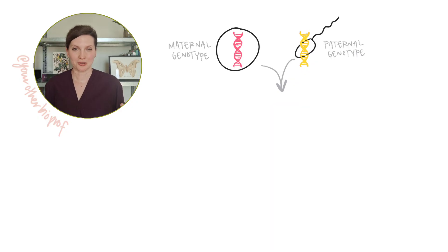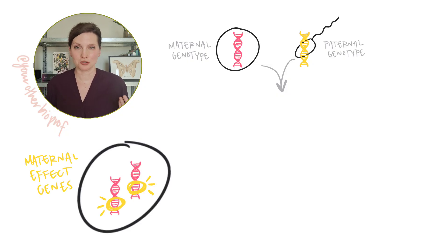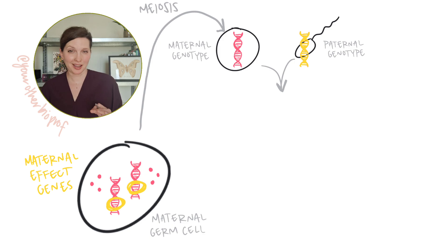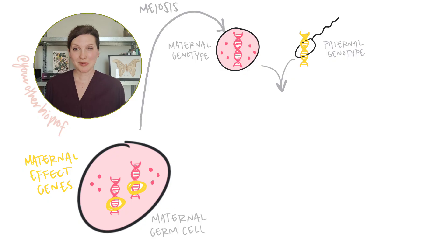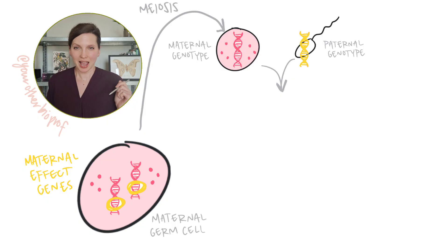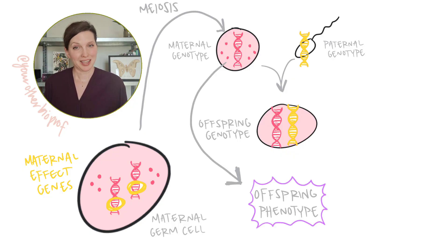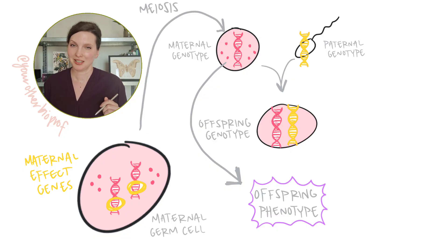With genetic maternal effects, certain genes called maternal effect genes are expressed in the maternal germline — these are the cells that will divide by meiosis to make eggs. The products of these genes, maybe RNA, maybe protein, will be deposited into what will become the egg cell. Mom has spiked the egg cytoplasm with products that her genes made. After fertilization, those products will impact the earliest stages of development, including certain offspring phenotypes. Here, the instructions are coming from the maternal genotype, not the offspring.